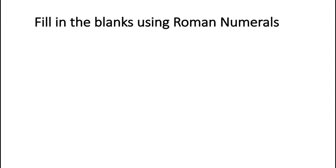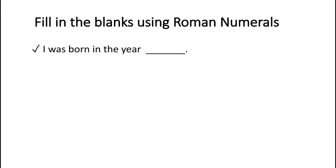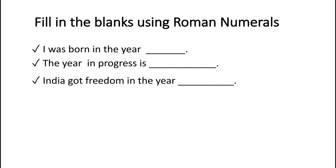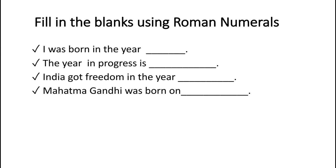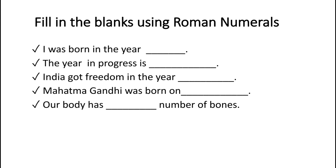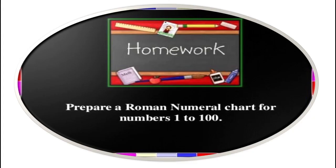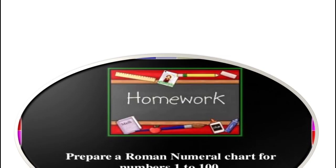Now let's check your learning through fill-in-the-blanks. You need to fill the given blanks using Roman numerals. Questions: 1) I was born in the year ___. 2) The year in progress is ___. 3) India got freedom in the year ___. 4) Mahatma Gandhi was born on ___. 5) Our body has ___ number of bones. For home task, prepare a Roman numeral chart for numbers 1 to 100. I hope you have learnt and understood today's lesson. Thank you.